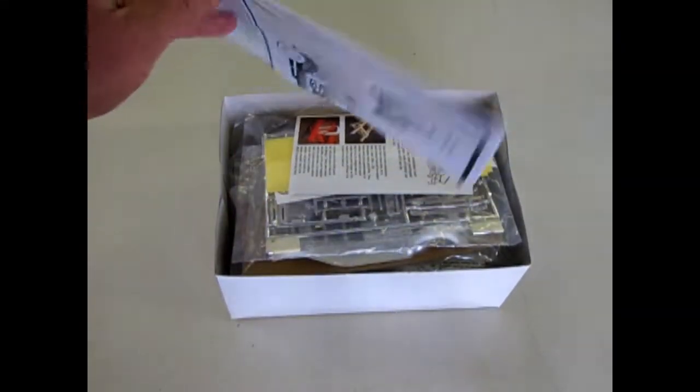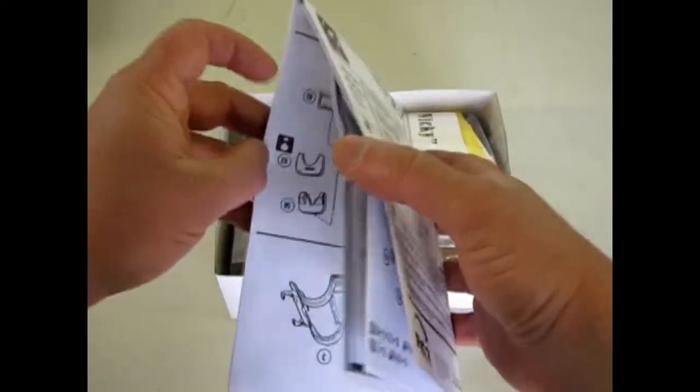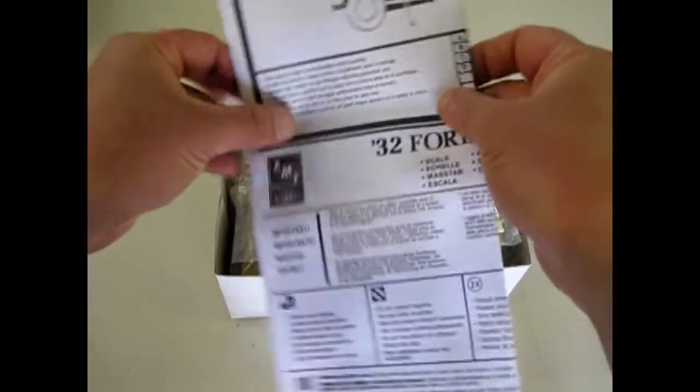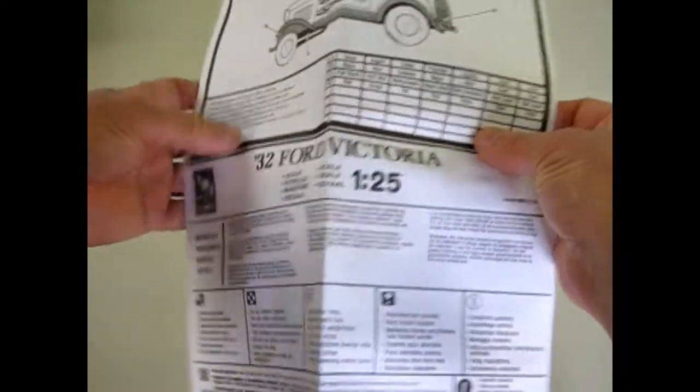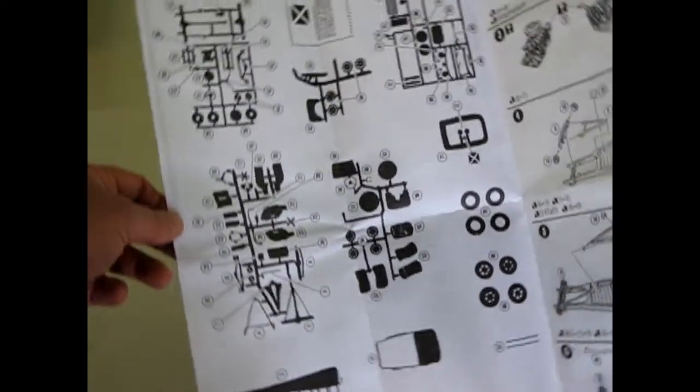However, it is still AMT Ertl's old 32 Ford kit that most of us remember from the 1970s, which was before my time actually. But when I grew up there was still a lot of these kicking around. So, well, there's the instruction sheet and they show you an explosion of all the parts.